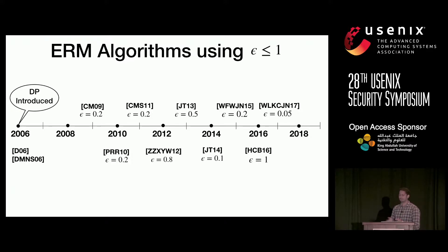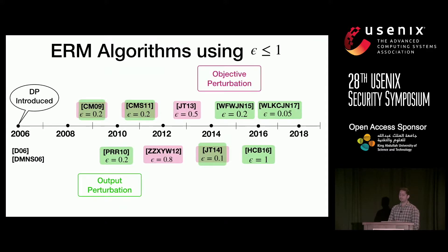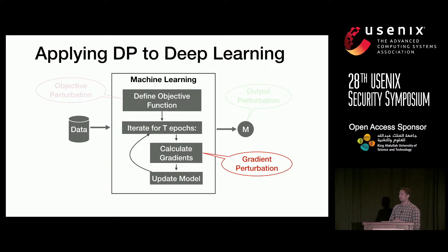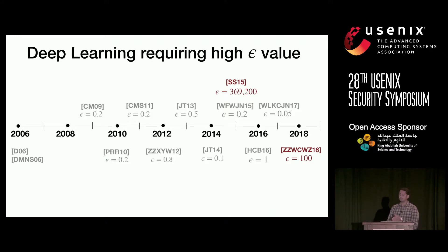Since the inception of differential privacy in 2006, there has been a lot of work using either objective perturbation or output perturbation for binary classification tasks using ERM algorithms, and these achieve pretty good utility for epsilon values less than one, which is good because we have theoretical guarantees here. But for deep learning, output perturbation and objective perturbation are not applicable. These methods require a bound on the sensitivity, and we don't know how to compute this for complex algorithms like deep learning. Initial attempts at using gradient perturbation for deep learning ended up consuming a budget on the order of 300,000 or so.